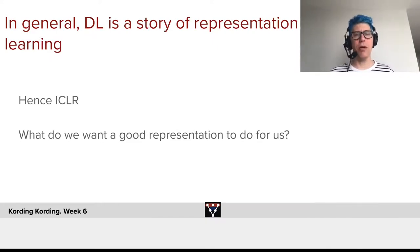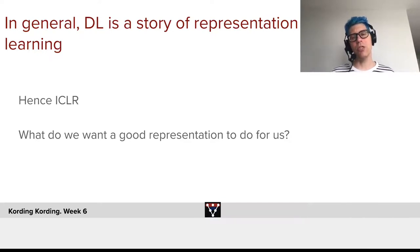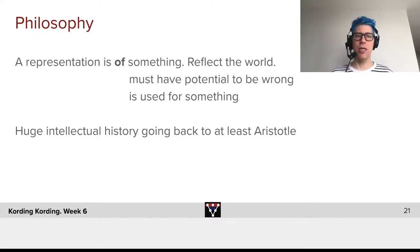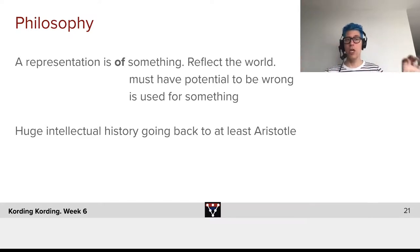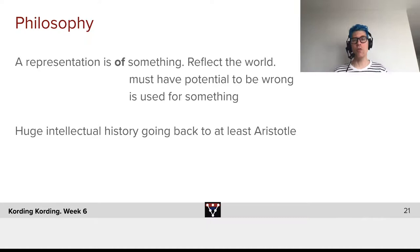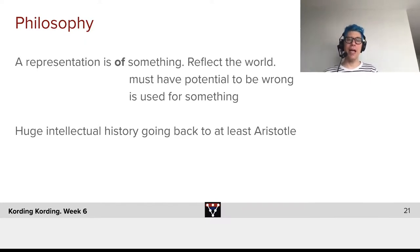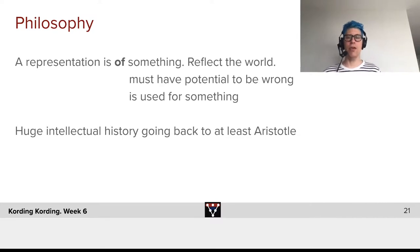In general, deep learning is a story of representation learning — hence ICLR as a big conference. What do we want a good representation to do for us? A representation is a representation of something. The neurons in a layer of LeCun's LeNet jointly represent the important aspects of the characters the system is seeing. They're supposed to reflect the world, which philosophically means it must be possible for them to be wrong. A representation must be used for something — otherwise it's hard to say it's a representation of anything. There's a huge intellectual history going back at least to Aristotle — a beautiful branch of philosophy.